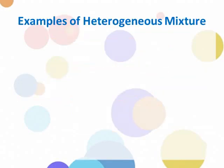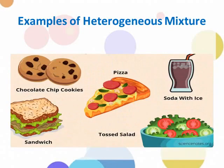Here are some examples of heterogeneous mixture. We have chocolate chip cookies and pizza — as you can see, we can identify the different toppings. Soda with ice: the combination of soda and ice, where it is very visible to identify its components. We also have sandwich and toast salad — we can identify the different ingredients of sandwich and toast salad.